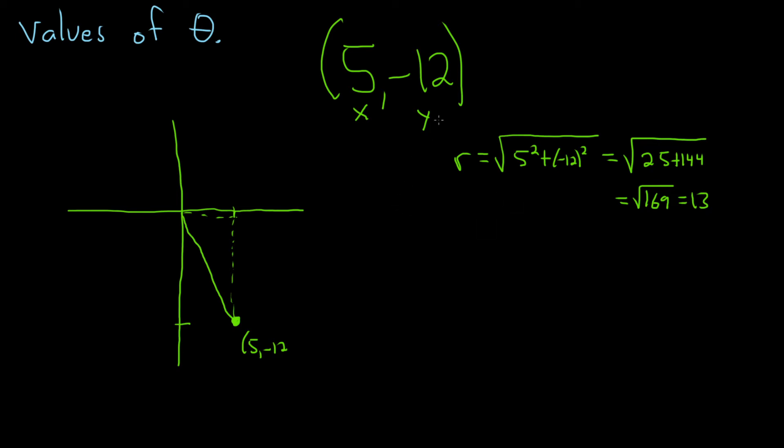And recall that the formulas are defined as follows. So the sine of theta is going to be y over r. So in this case the y is simply negative 12. So it's negative 12 over 13. So there's our first answer.